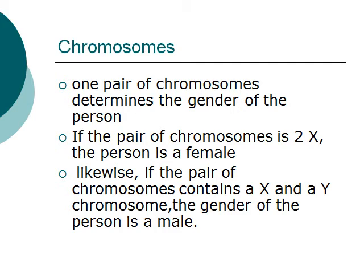If the pair of chromosomes is 2X, the person is thus a female. Likewise, if the pair of chromosomes contains an X and a Y chromosome, the gender of the person would be a male.